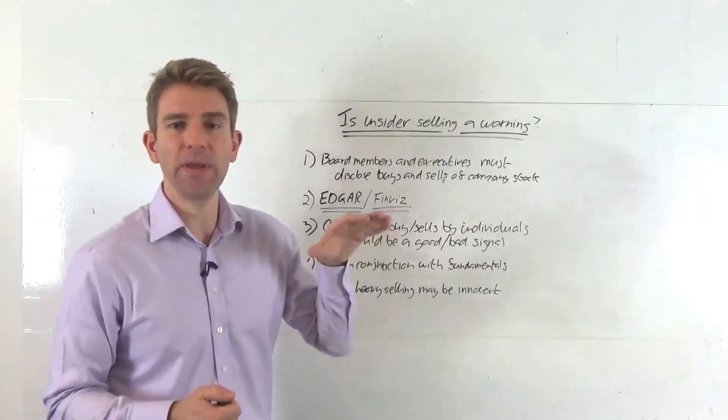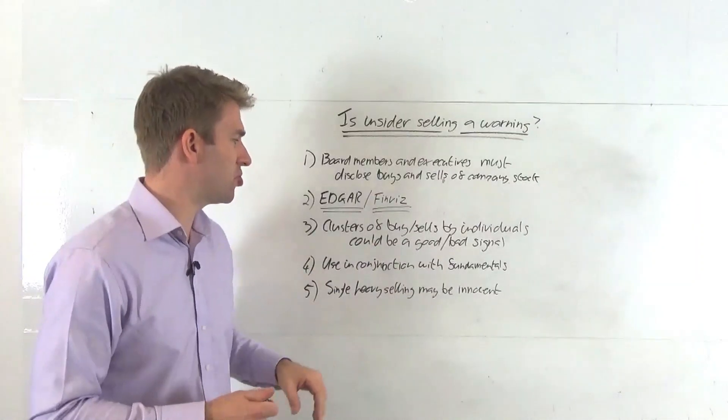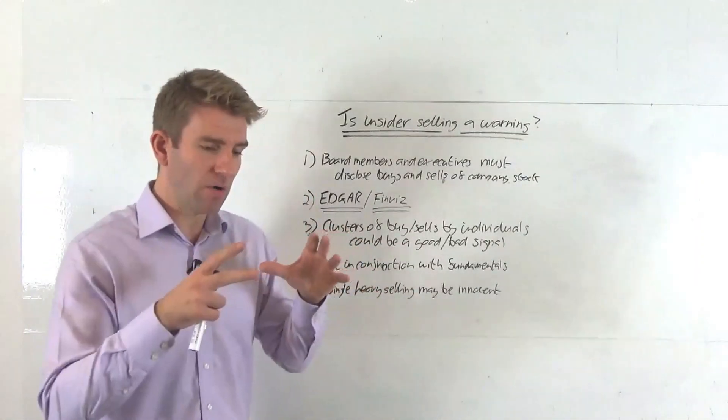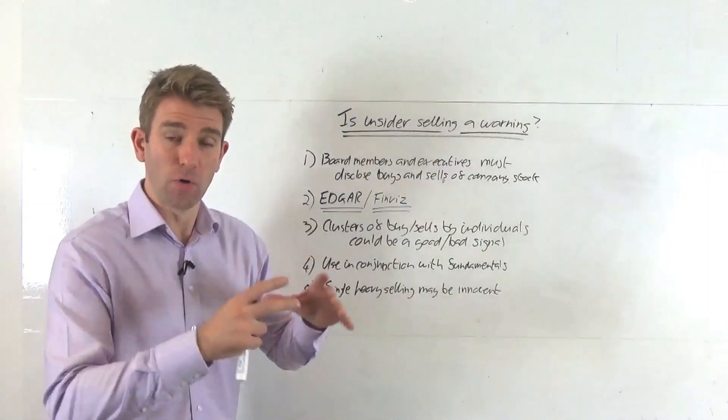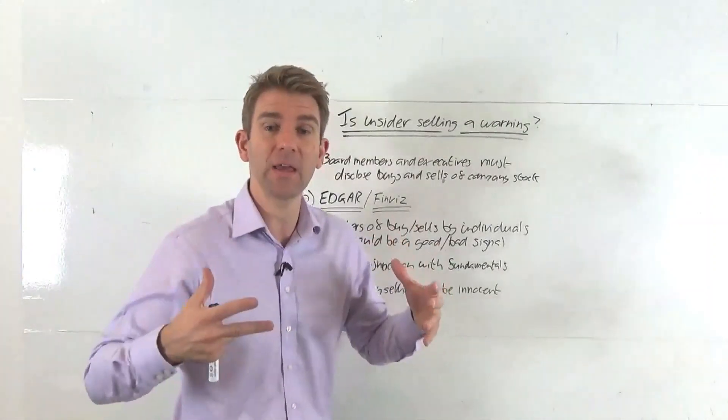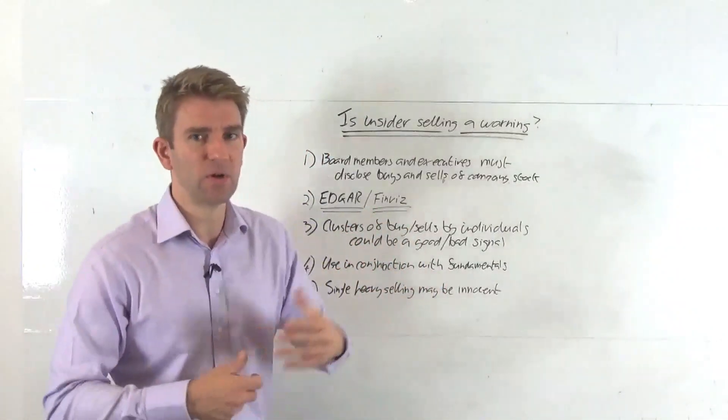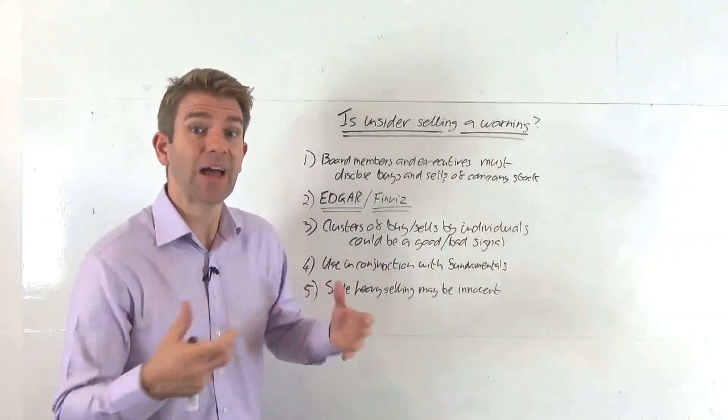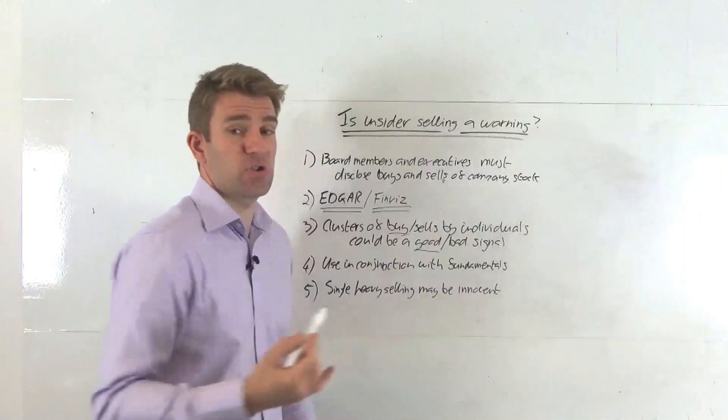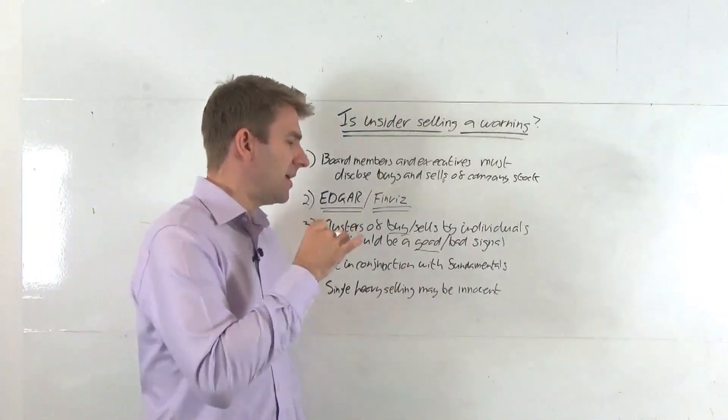Clusters of buys or sells by individuals could be good or bad signals. What do I mean by that? If you've got a cluster of buys from a group of directors or board members - five or six people buying a decent amount of stock relative to their net worth, not just a hundred quid but some serious cash - that could be a good signal the stock is going places.